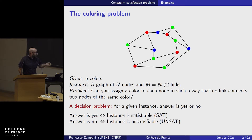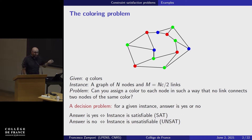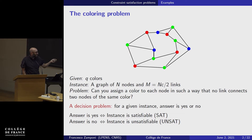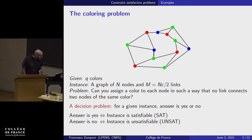I will call an instance — in this case the graph — satisfiable, or SAT, if the answer is yes, and unsatisfiable if the answer is no.